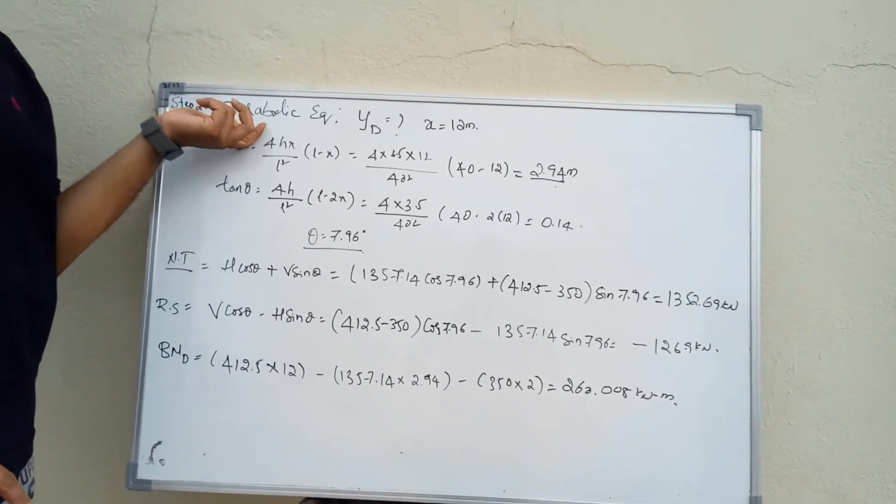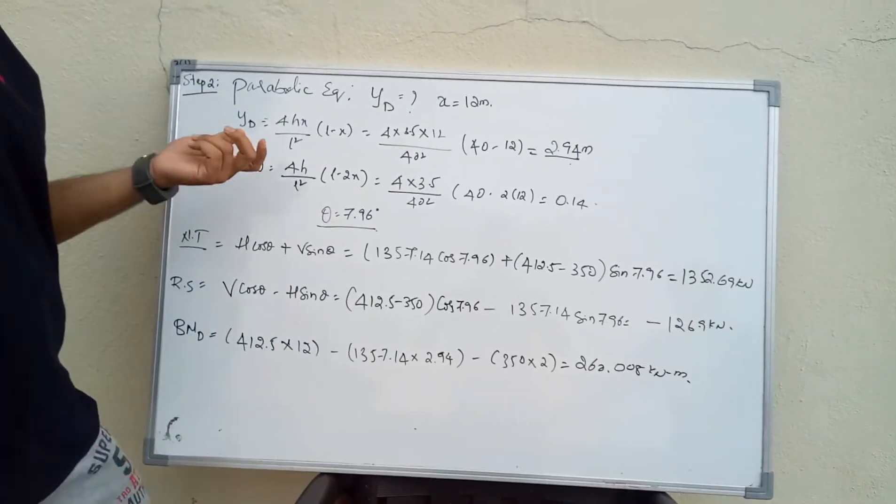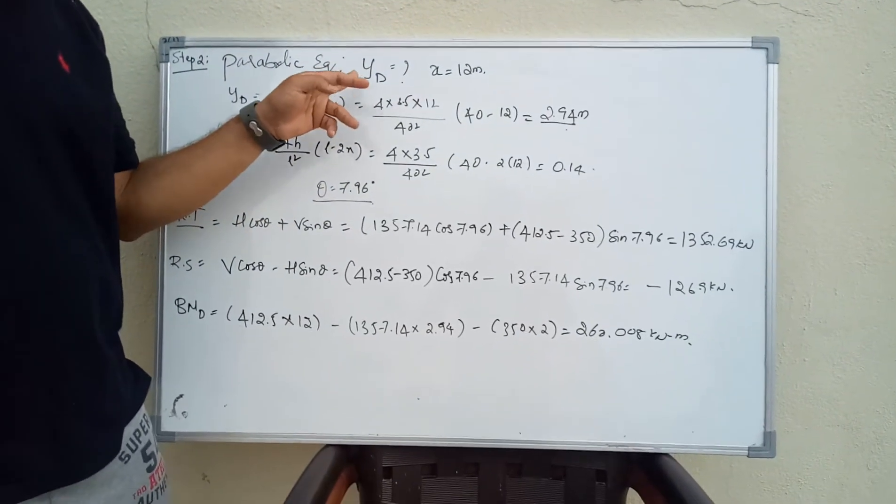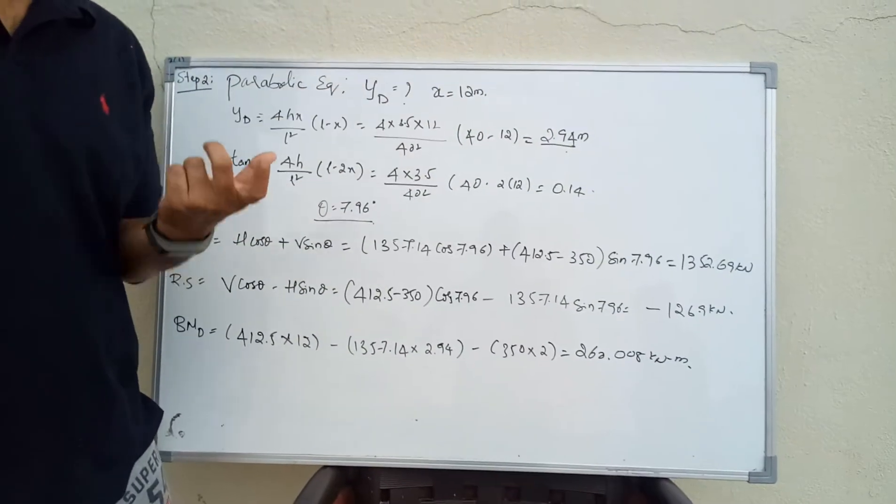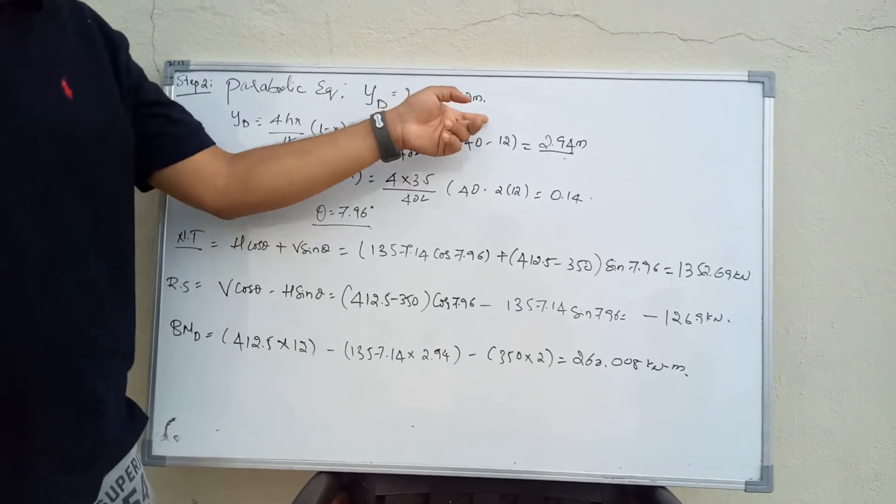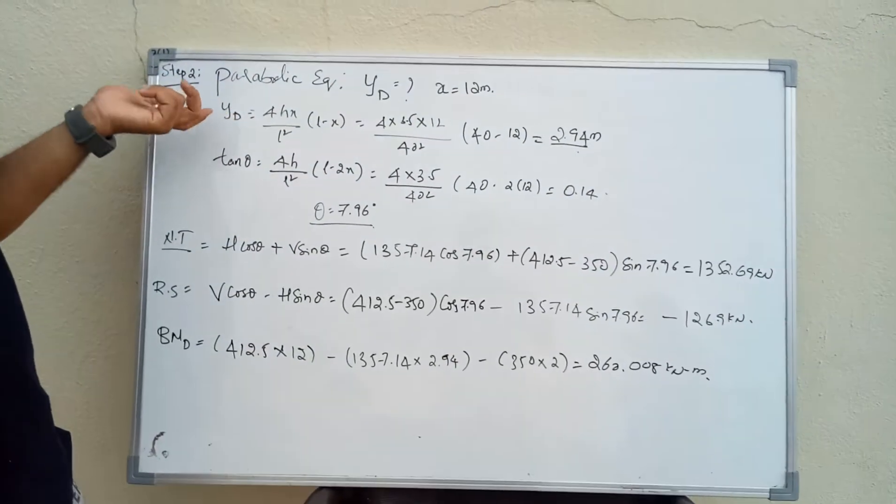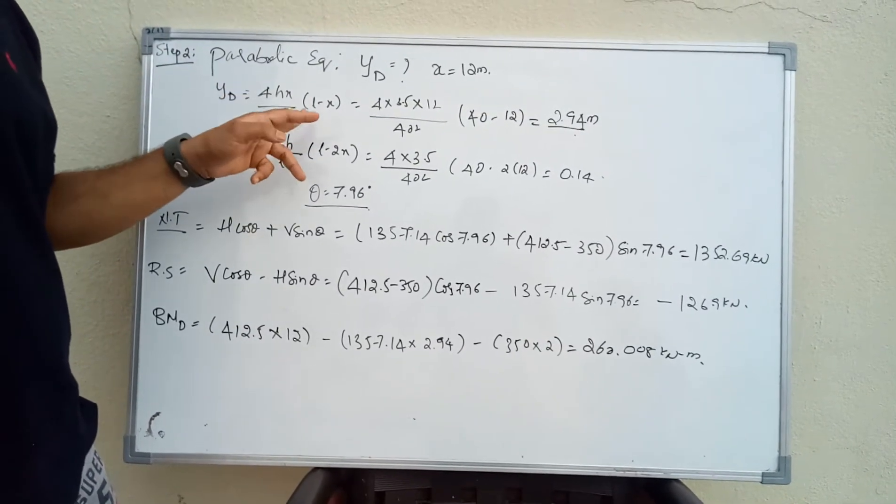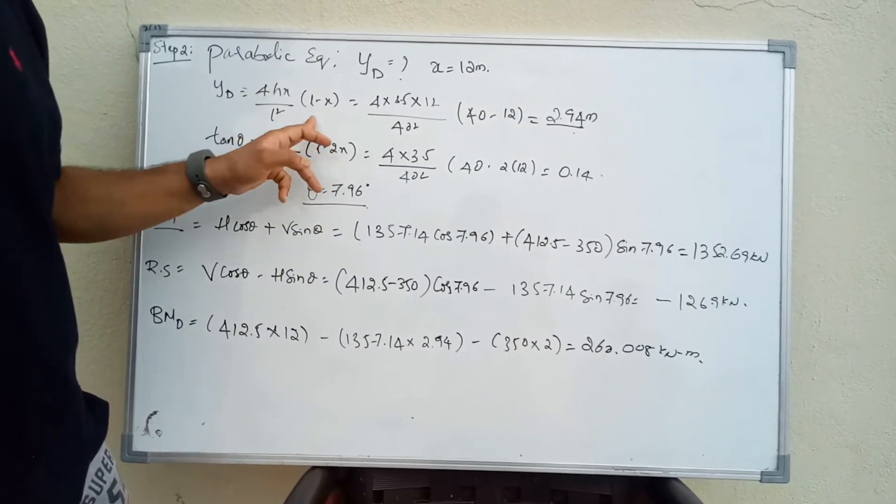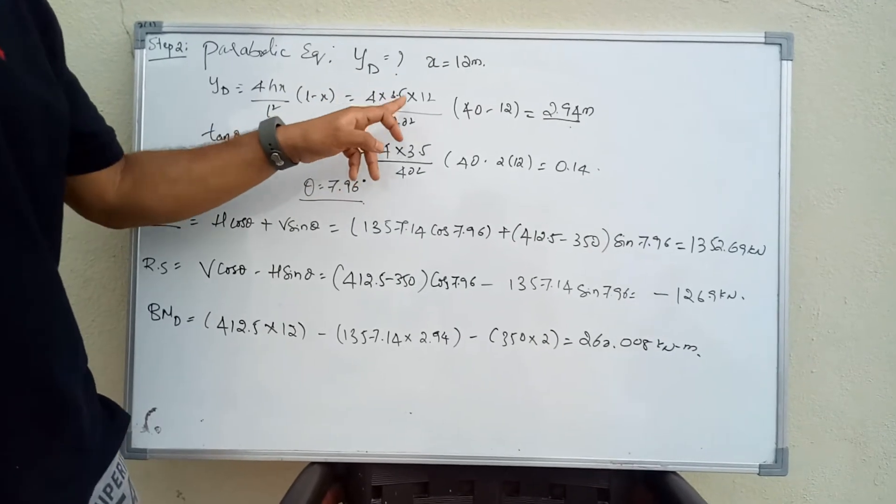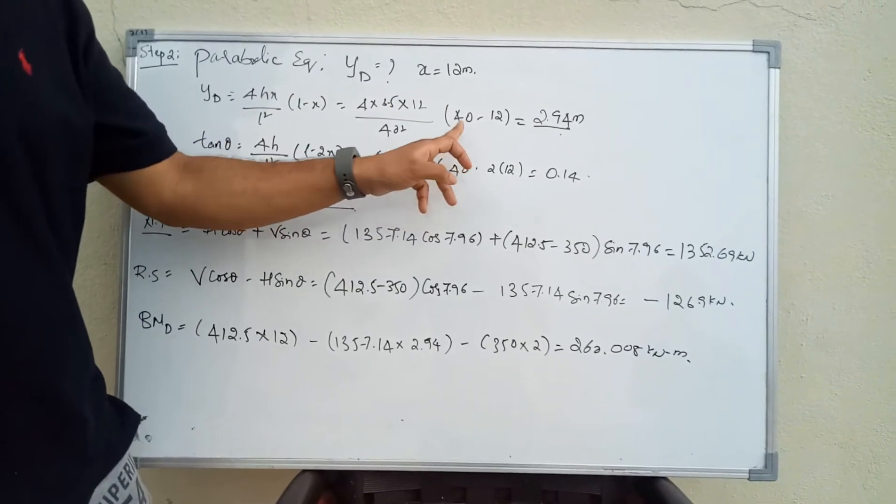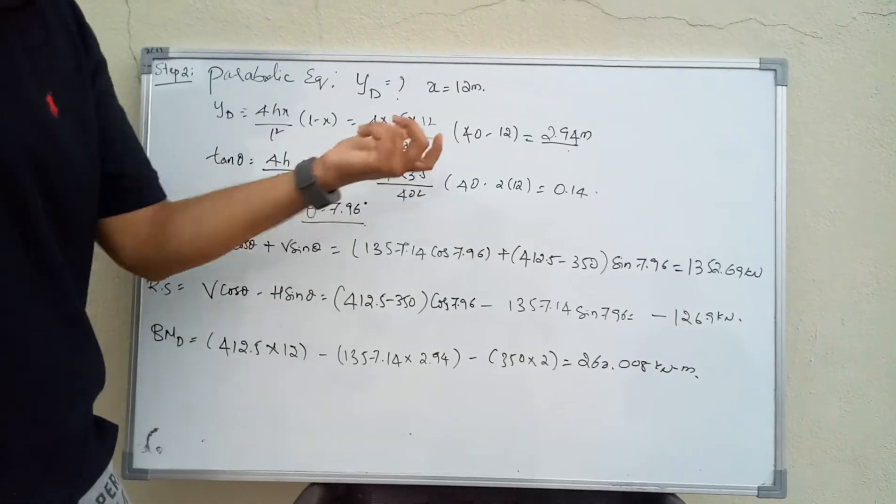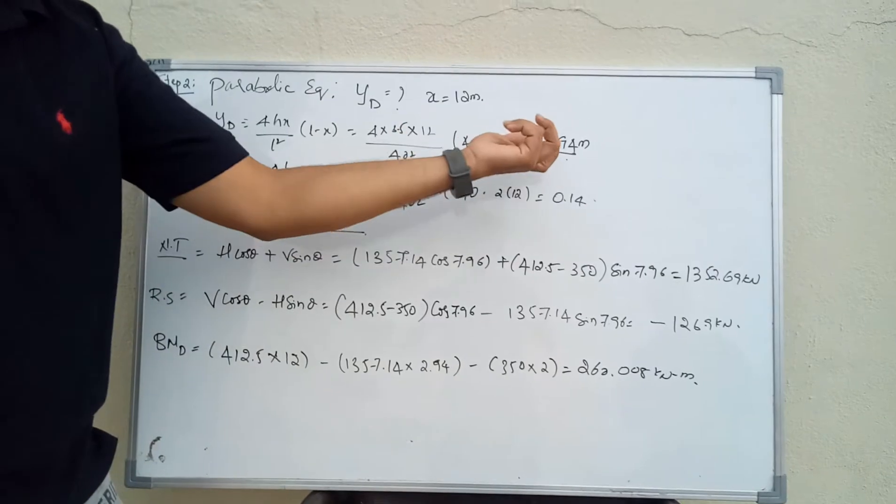The next step is the parabolic equation to find YD at point D where X equals 12 meters. The formula is YD equals 4HX by L squared into L minus X. Substituting the values: 4 into 3.5 into 12 into 40 minus 12, we get 2.94 meters.